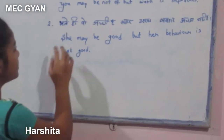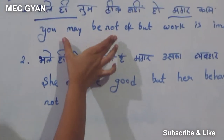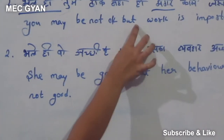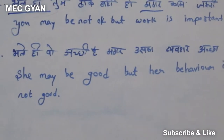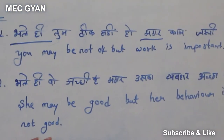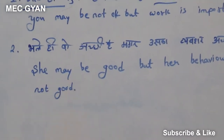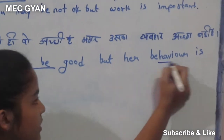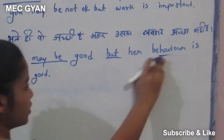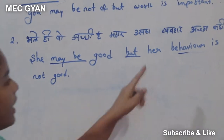Maybe and but. As you can see, after a short sentence, here is 'but'. When this kind of sentence comes, you have to make it like this: 'She may be good, but her behavior is not good.' You can make many sentences like this using 'maybe' and 'but'.